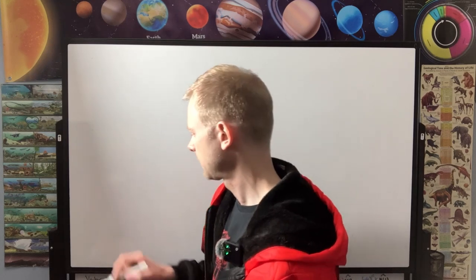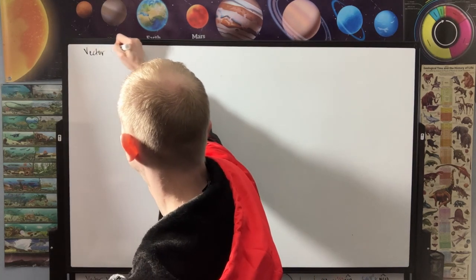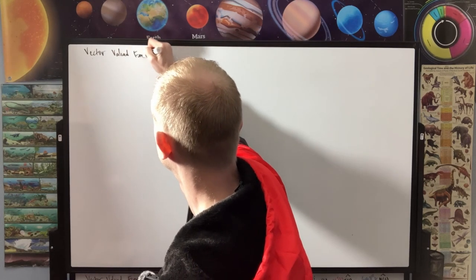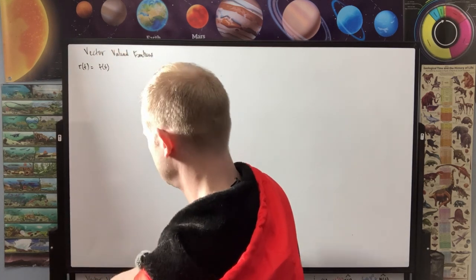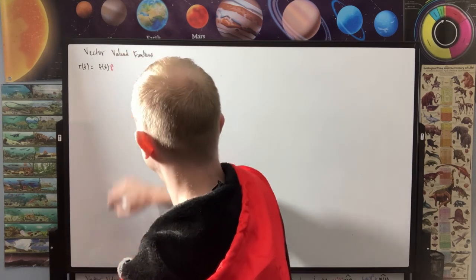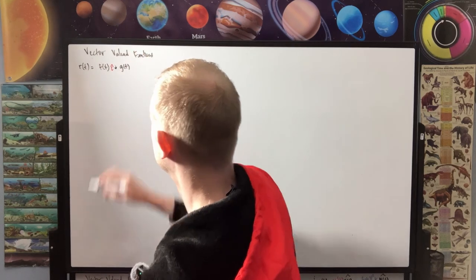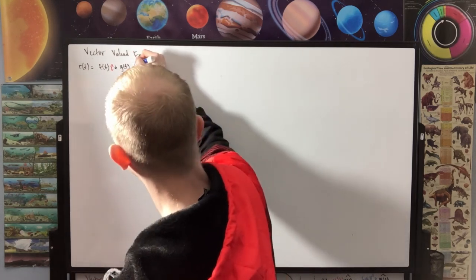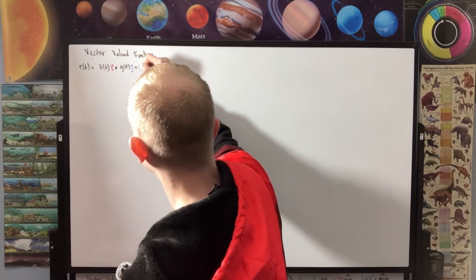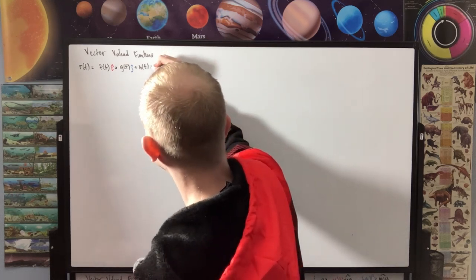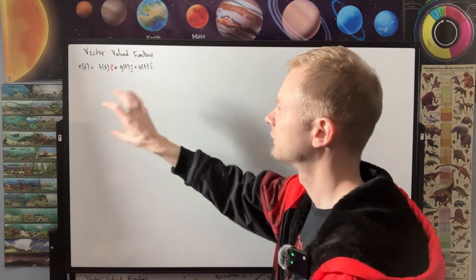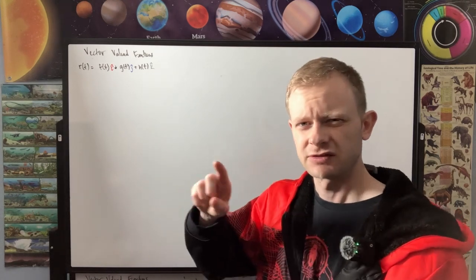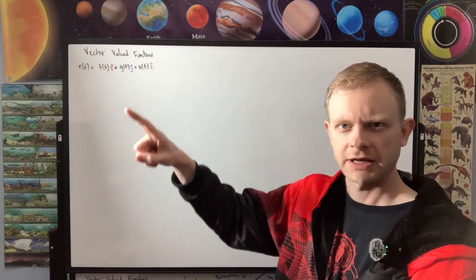There are many ways to represent graphs in 3D. One of the good ways is to use vector-valued functions. What this essentially means is we'll have R(t) equal to f(t) in the i direction, plus some other function g(t) in the j direction, plus h(t) in the k direction. This basically splits a function into three components, with an arrow drawing out the curve.